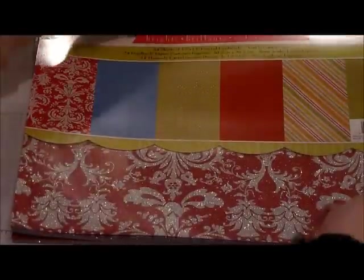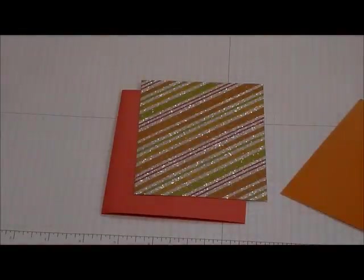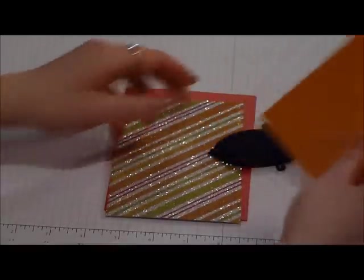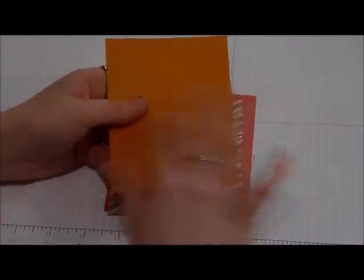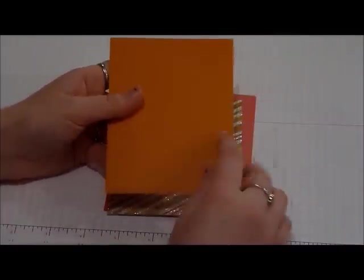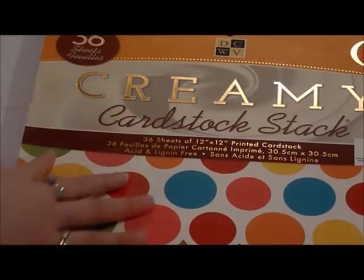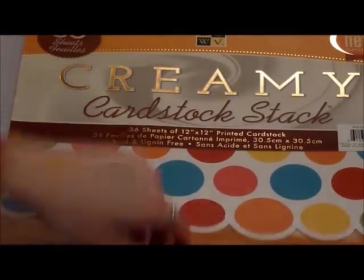This layer is 4 by 5.25 and then this orange is the same as that red that I used from the You Brighten My Day stamp set the other day. That is from the Creamy cardstock by Dye Cuts with a View. It's just got a lot of really bright colors.